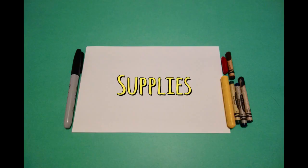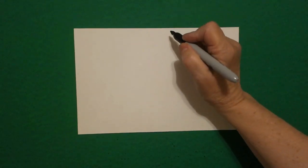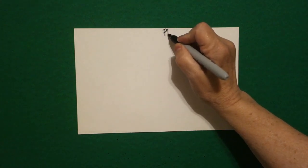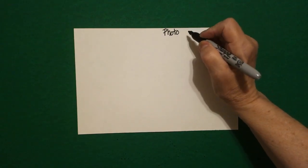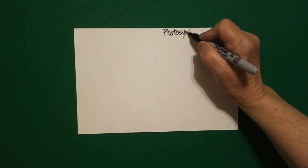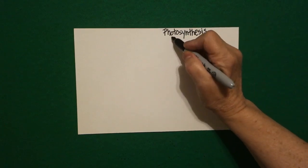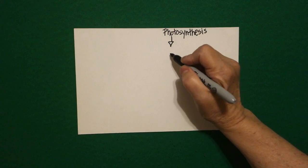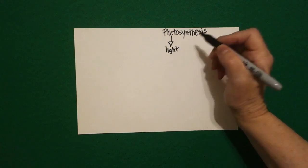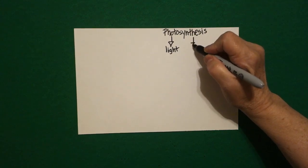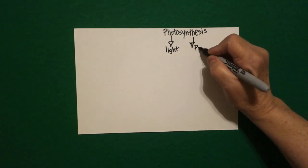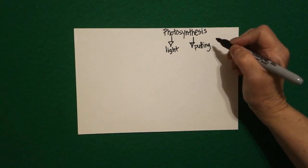Today's project is how to draw a diagram of photosynthesis. Right here at the top I'm going to write the word photosynthesis. This is one word, but if you divide it up in parts, the photo part stands for light and the synthesis part stands for putting together. So it's basically putting together light.